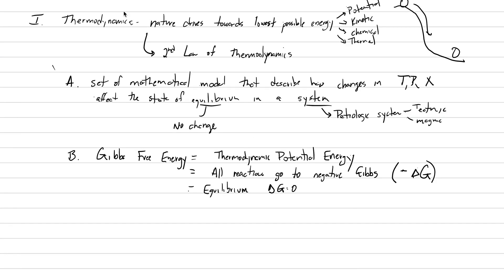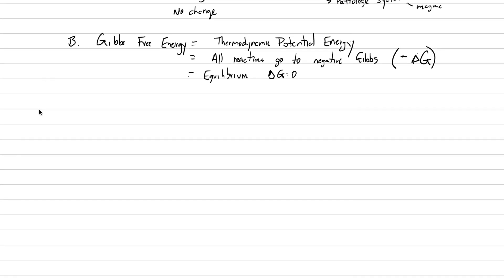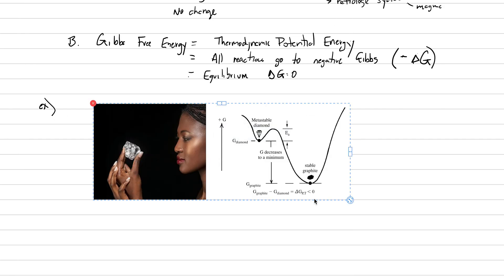So that's our background on thermodynamics. The reason why this is important is because thermodynamics is the backbone for all phase diagrams that you're going to see. Now we're going to do one example here using diamonds and graphite to talk a little bit more about thermodynamics and Gibbs free energy.